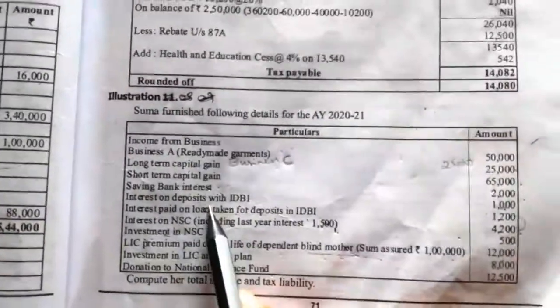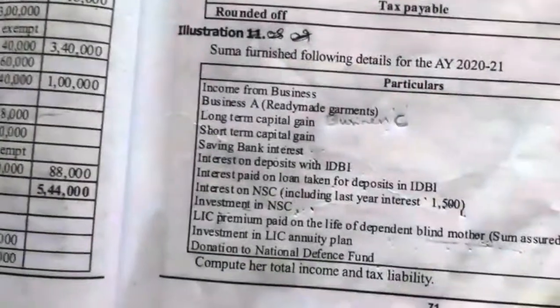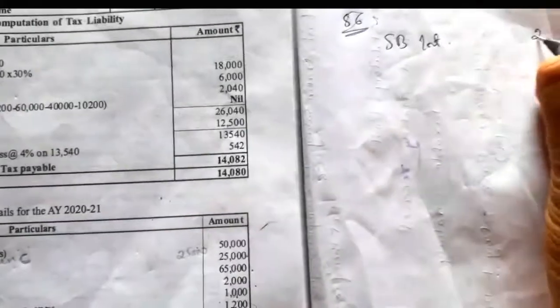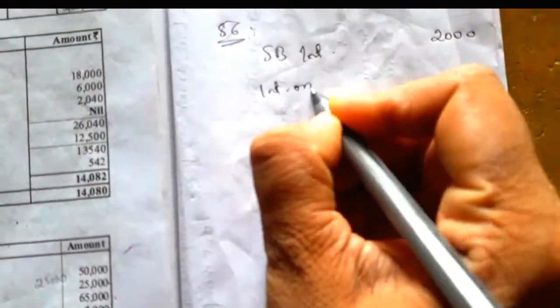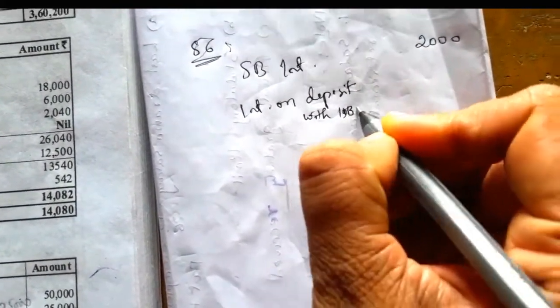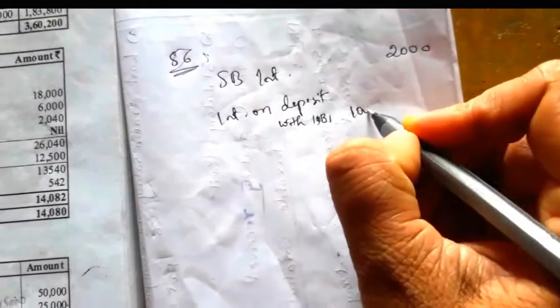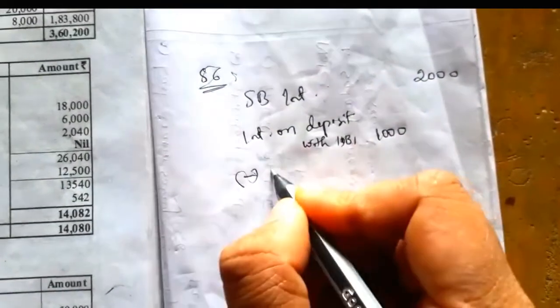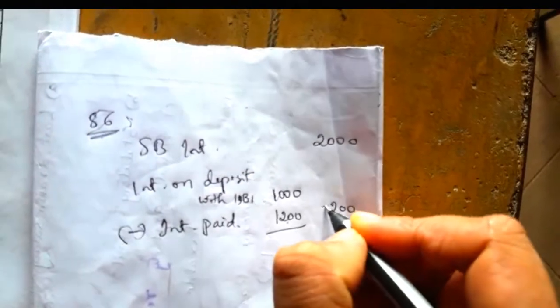Now we'll see the calculation. Under income from other sources — Section 56 — we have: saving bank interest rupees 2,000; interest on deposit with IDBI rupees 1,000 (written in inner column). We can deduct interest paid for the IDBI deposit, that is rupees 1,200, so that gives a net of negative 200, which can be set off from other income.